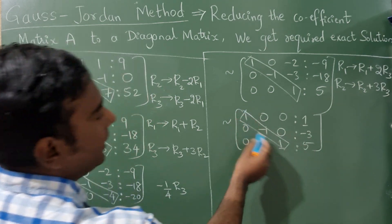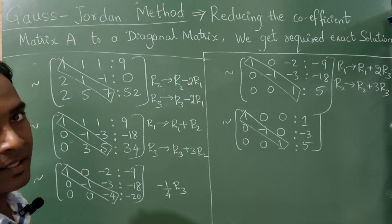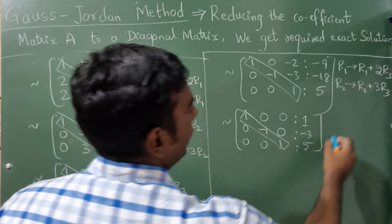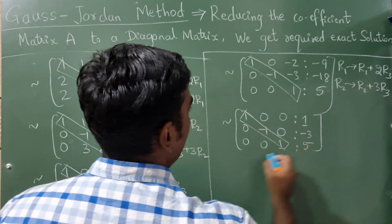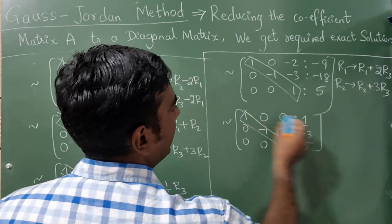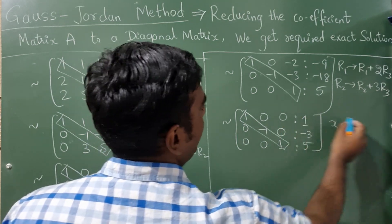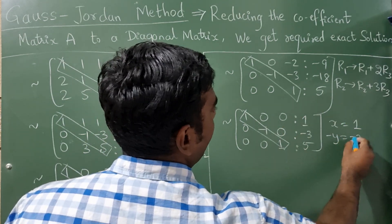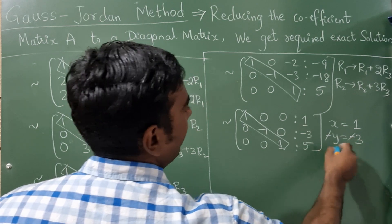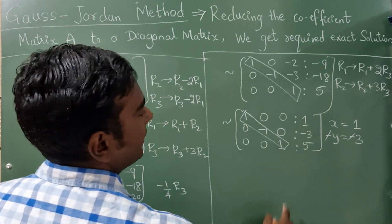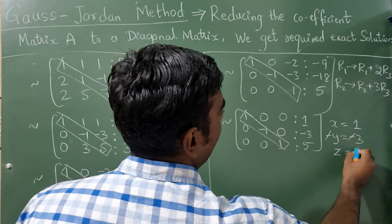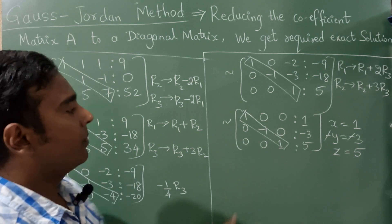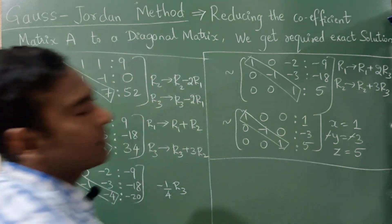You can see there are only diagonal elements and rest all are 0. So from here you get the x values: x = 1, and -y = -3 means y = 3. From the third row, z = 5. So this completes your answer.